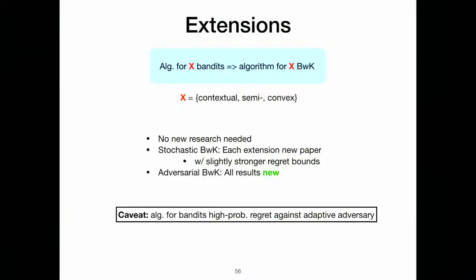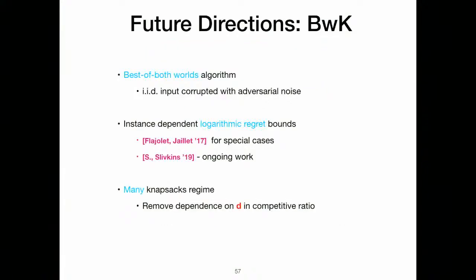Some future directions for bandits with knapsacks: the ideal goal is 'best of both worlds' — an algorithm that doesn't need to know a priori whether it's in a stochastic or adversarial setting, but automatically achieves the right bounds for whichever setting it's in. This is known without knapsacks, and you'd want to achieve it with knapsacks. Also, we'd like to remove the dependence on D in the competitive ratio — there's a D² term which matters when D is not a constant.